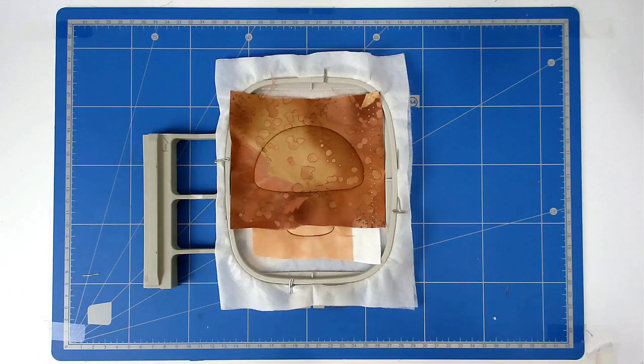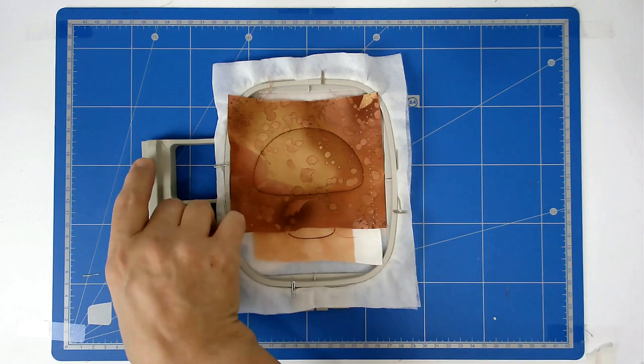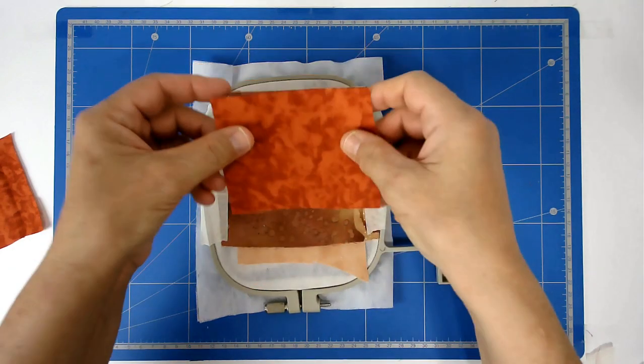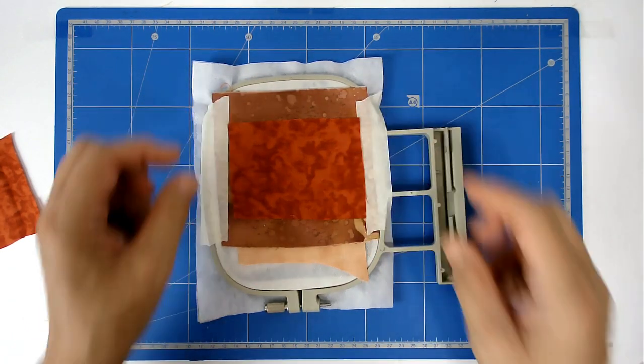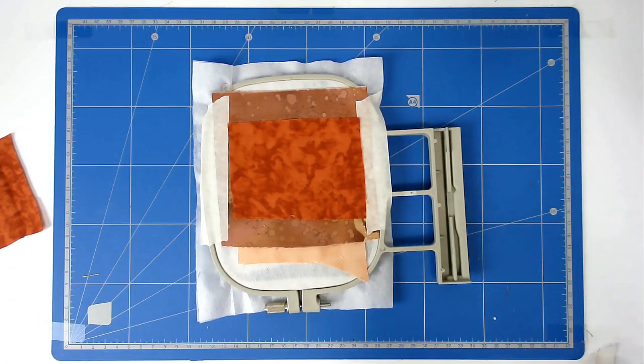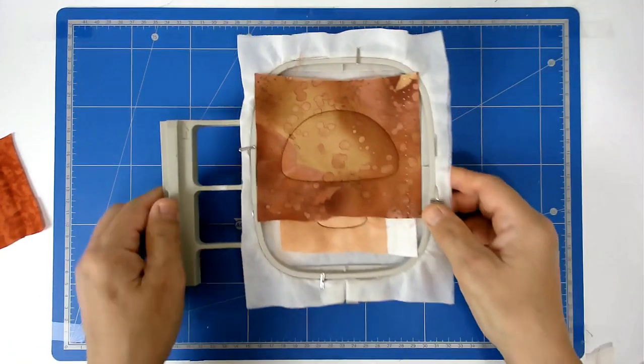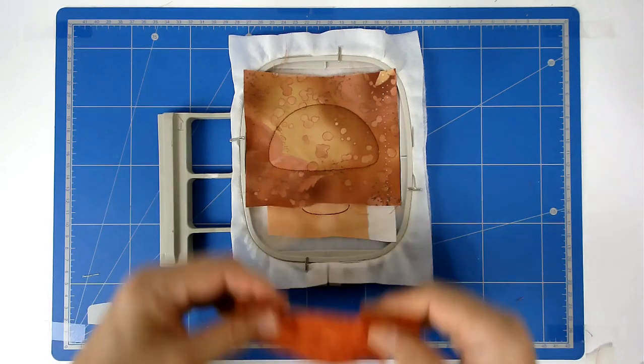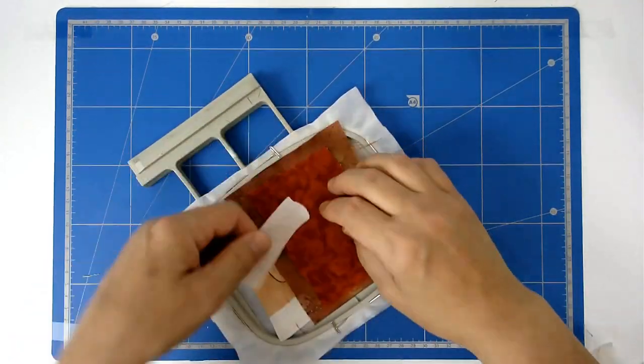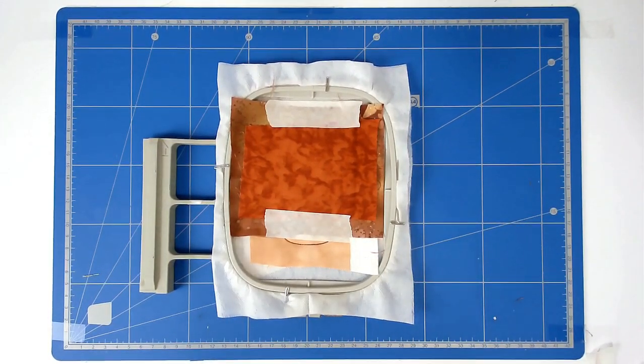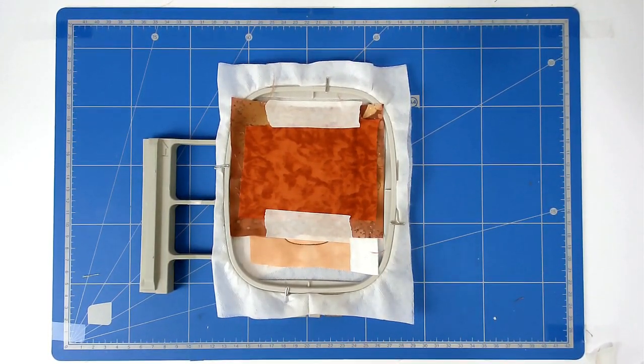You're now going to add the spots. Turn your hoop over and place your fabric for the spots over the outline, then tape it in place. Turn your hoop back and do the same on the front. Pop your hoop into your machine and stitch round number five to secure them.